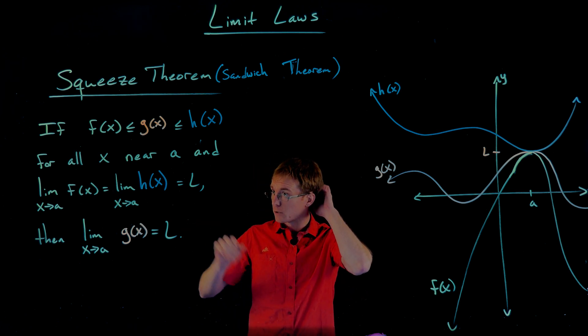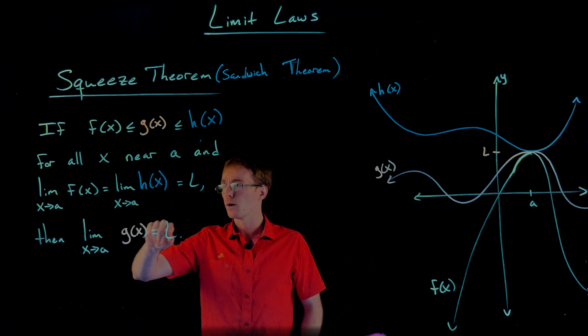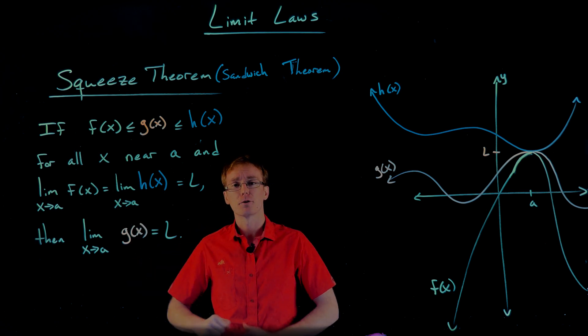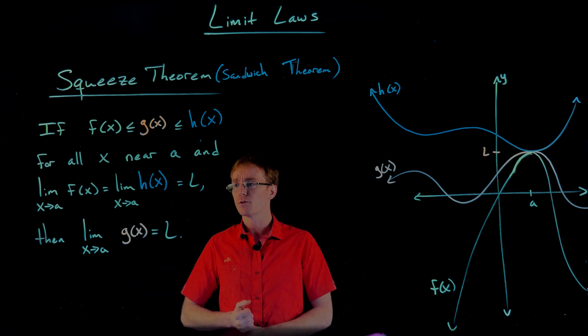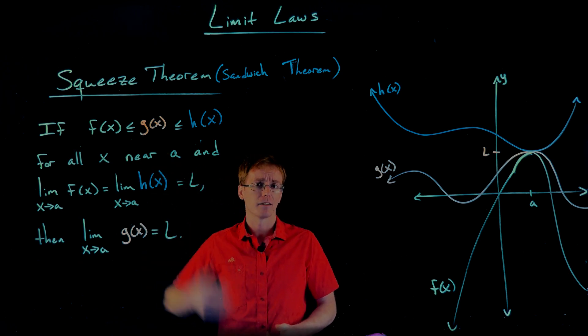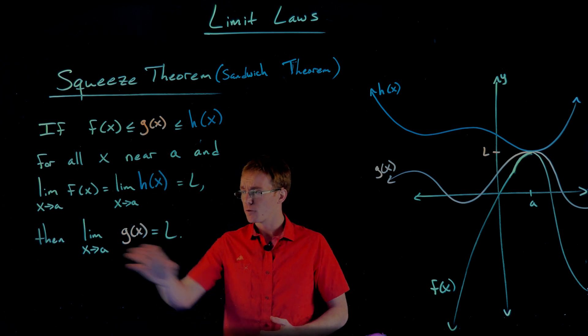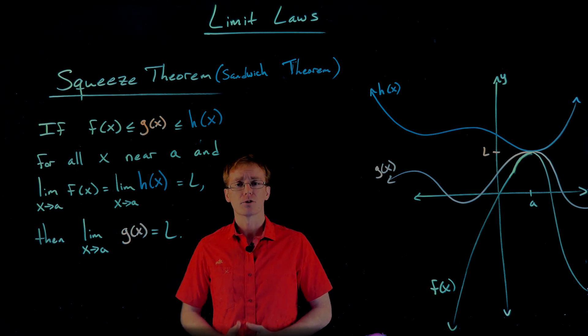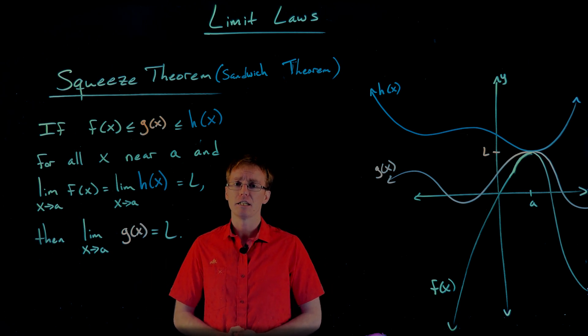So if that inequality is true, as well as the limit as x approaches a of f is equal to the limit as x approaches a of h, and both of those are the same, say some number L, then that's going to force the limit as x approaches a of our middle function g to also be equal to L.